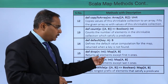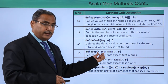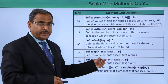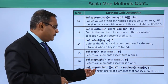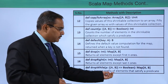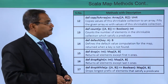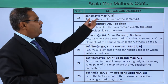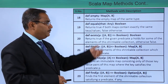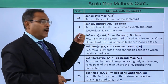The drop method returns all elements except the first n ones, where n is passed as the input parameter. dropRight returns all elements except the last n ones. We are having dropWhile, which drops the longest prefix of elements that satisfy a certain predicate. We are having empty, which returns the empty map of the same type. We are having equals, which returns true if both maps contain exactly the same key-value pairs, and false otherwise.